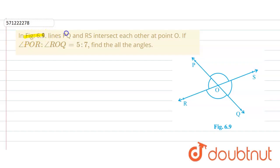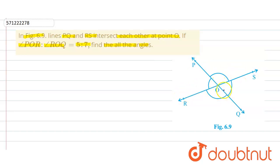In the given question, in figure 6.9, lines PQ and RS intersect each other at point O. If angle POR to angle ROQ is equal to 5 is to 7, then we have to find all the angles. So it is given that angle POR to angle ROQ is equal to 5 is to 7.